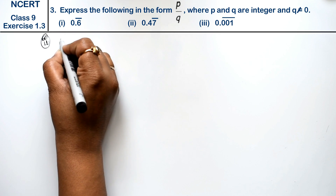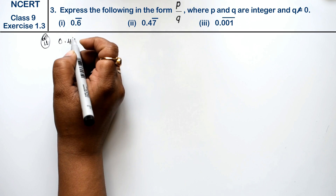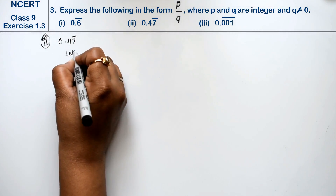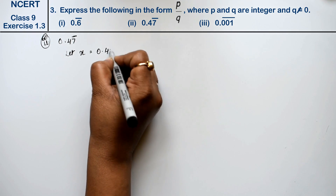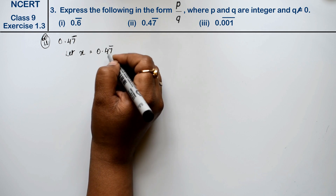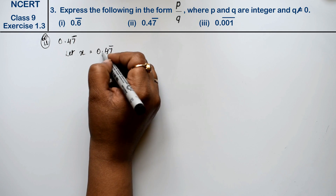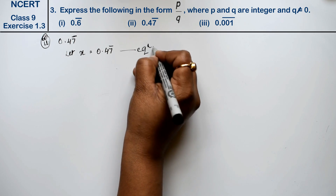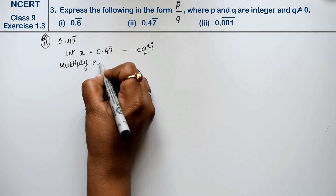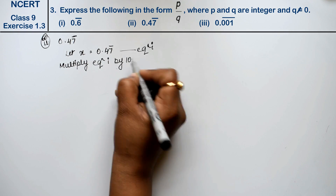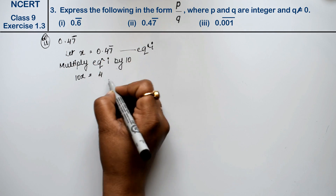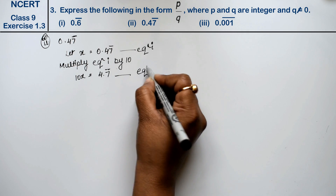Let's do the second part: 0.47̄, where only 7 has a bar over it. Here there is a bar only on 7. So let x equal to 0.47̄. This is our equation first. We should always note the position of the bar. We will multiply equation first by 10, so 10x equals 4.7̄. This is our equation second.